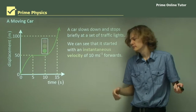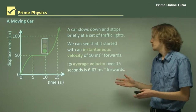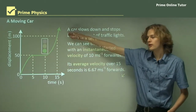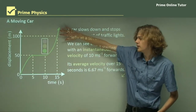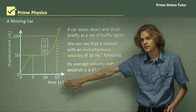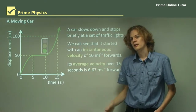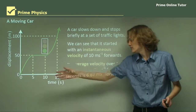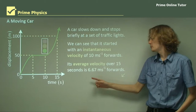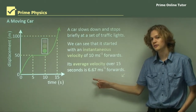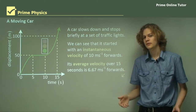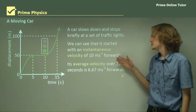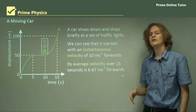What about its average velocity? Its average velocity over 15 seconds can be found by joining the very start of the graph to the very end. We end up at 100 meters displaced after 15 seconds. Dividing 100 by 15 gives an average velocity of 6.67 meters per second. Of course, because it's a vector, in both cases we need to include direction as well — so 10 meters per second forward, otherwise it would just be the speed.